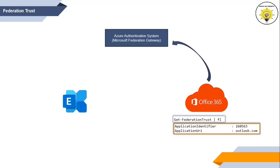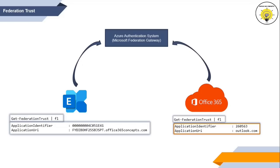For on-premise Exchange organization, a Federation Trust is not created automatically. We can create a Federation Trust between on-premise Exchange and Azure Authentication System by running HCW, or it can be created with PowerShell commands. If you run Get-FederationTrust | fl in on-premise Exchange, you will see an Application Identifier value and Application URI assigned by Microsoft Federation Gateway to your on-premise Exchange organization.